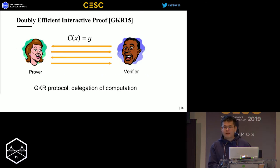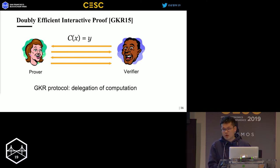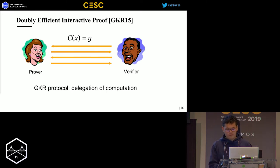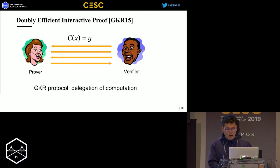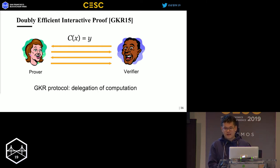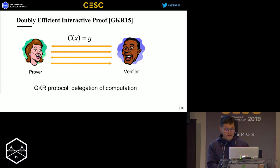The building block of Libra is a doubly efficient interactive proof proposed by Shafi Goldwasser, Yael Kalai, and Guy Rothblum in 2008, widely known as the GKR protocol. In this protocol, the verifier delegates the computation of some circuit C to the prover — given input X to the circuit, the evaluation of circuit C should be Y. It is called doubly efficient because the prover time is only polynomial in the circuit size, while verification time is only logarithmic in circuit size and linear in input size.